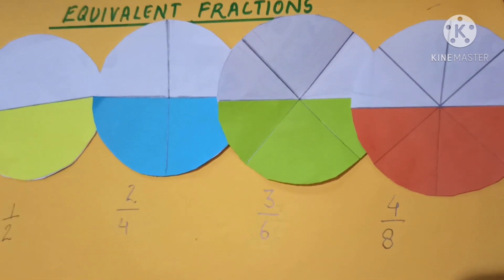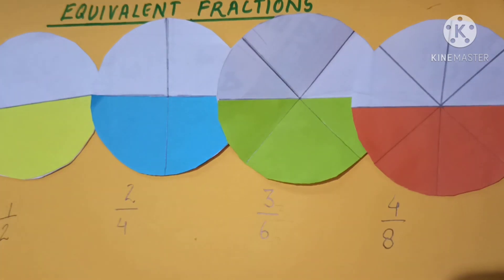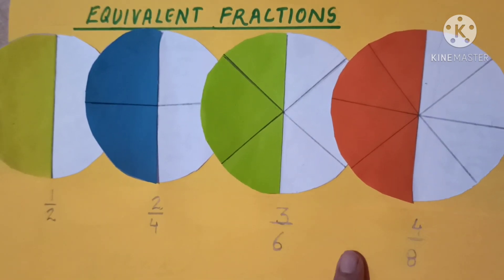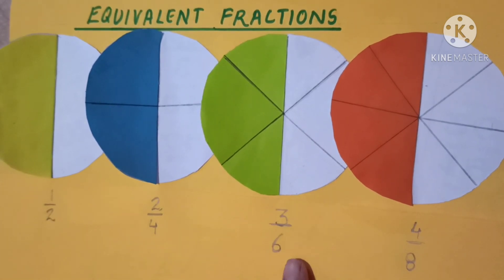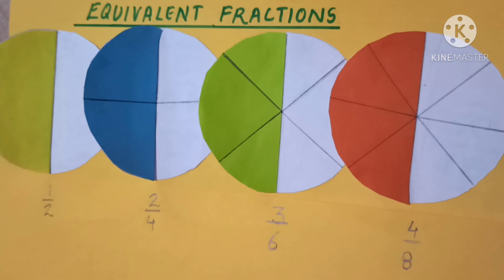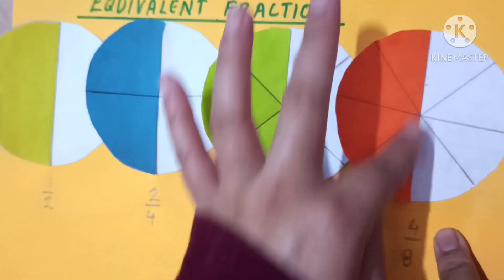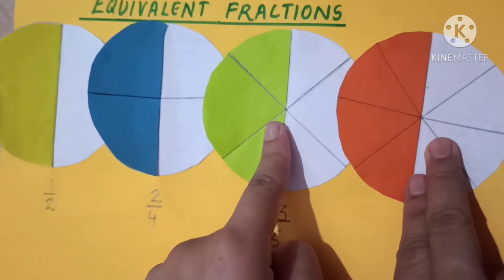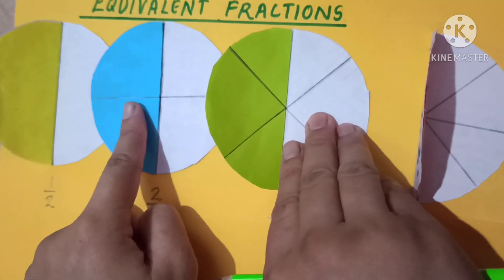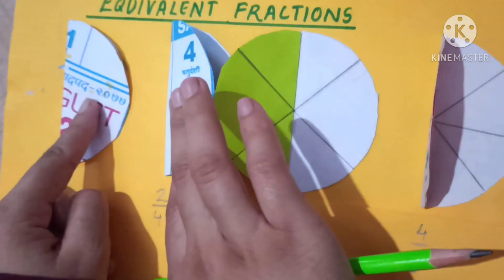So this much we already know. Now let's compare all these fractions and all these figures together. By comparing the figures and their respective fractions, we can easily say that although the fractions are different — one by two, two by four, three by six, and four by eight — the portion covered by the colored part in each of the figures is equal.